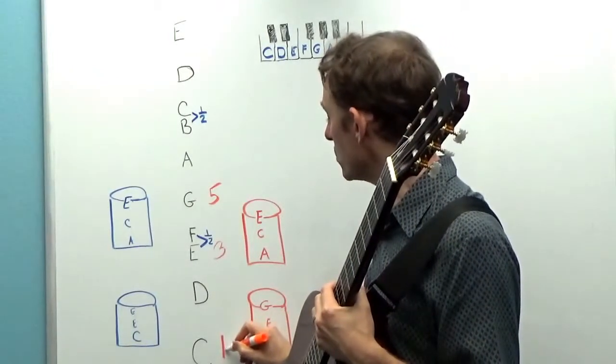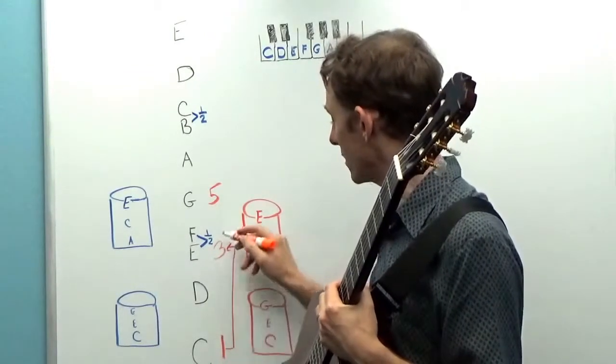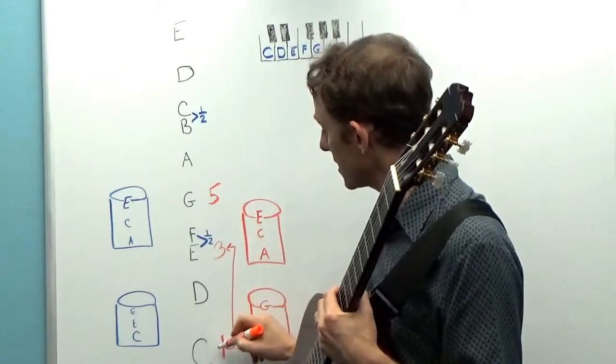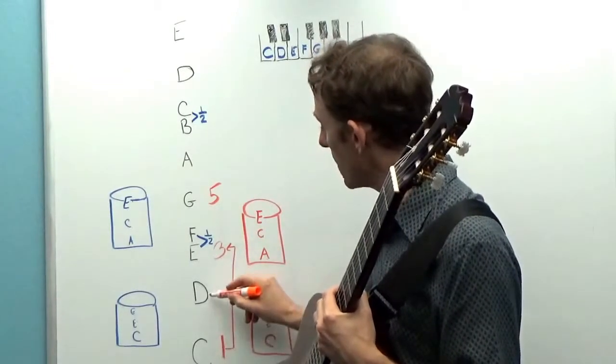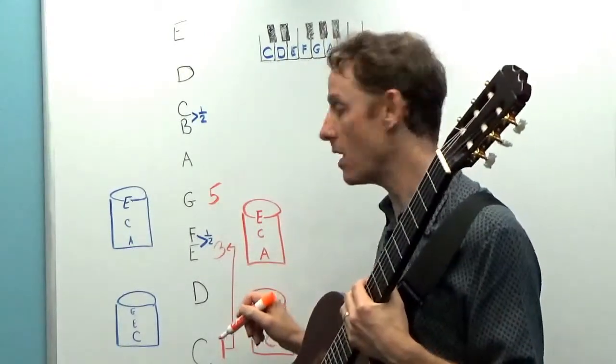Now if the first interval in the chord, the distance from the one to the three, is a major third, that is it consists of a whole step plus a whole step, a big third, then the chord itself will be major.